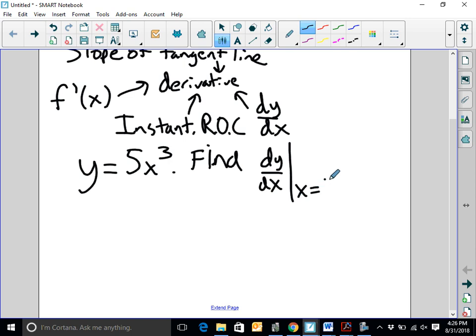From this notation here, we see y equals 5x cubed. It says find dy/dx, and then we see that big vertical line and x equals 2. That means we want to find dy/dx, the derivative of y, at the value x equals 2. Whenever we're finding a derivative at a point, we're finding the slope of the tangent line at that point. But before we find the derivative at 2, we want to first find the derivative at x.